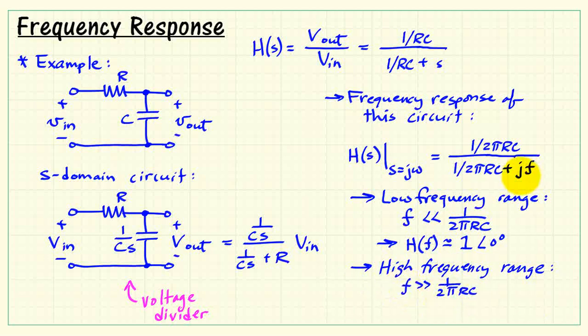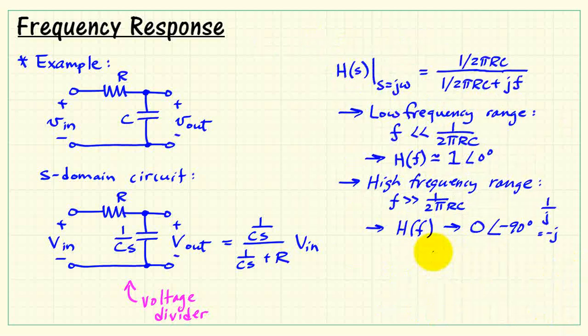For high frequencies where f is much higher than 1 over 2π RC, now the imaginary part dwarfs the real part. And in the limit, we find that this is such a large value that the denominator goes to infinity, and we're left with 0 at a phase angle of minus 90 degrees. And just by way of reminder, 1 over j, which is really what you're left with in that limit operation, is minus j, and that's minus 90 degrees.